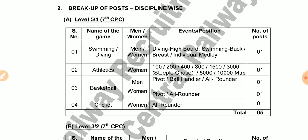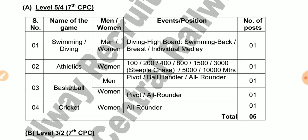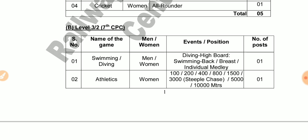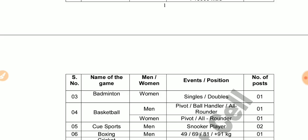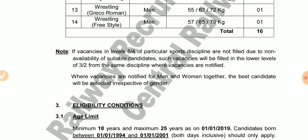The sports disciplines included are Swimming, Diving, Athletics, Basketball, and Cricket. There are 12 posts available for Swimming and Athletics categories.